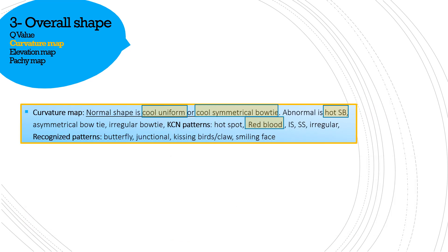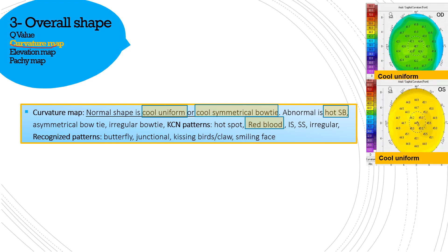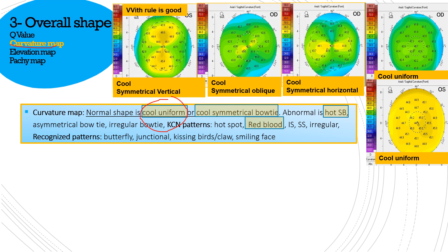The second is the curvature map. The normal shapes are cool uniform or cool symmetrical bow tie. These two shapes are not bow ties but show cool uniform colors, and that is a normal pattern. Most corneas with cool colors and uniform patterns are normal corneas. I've added the word 'cool' to the symmetrical bow tie because a symmetrical bow tie can be abnormal — it must be cool. These three bow ties showing yellow and green colors are cool symmetrical bow ties, which is another normal pattern.